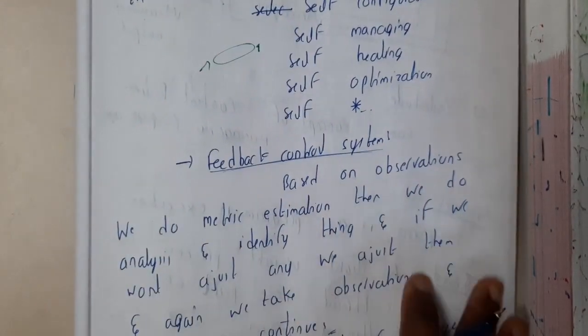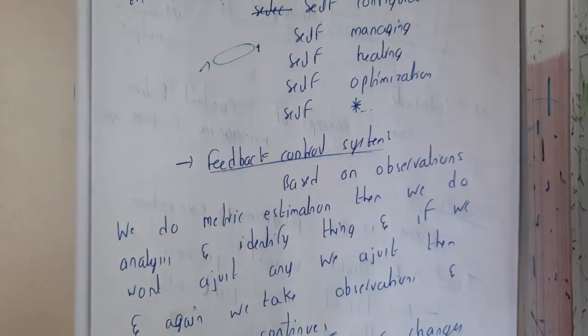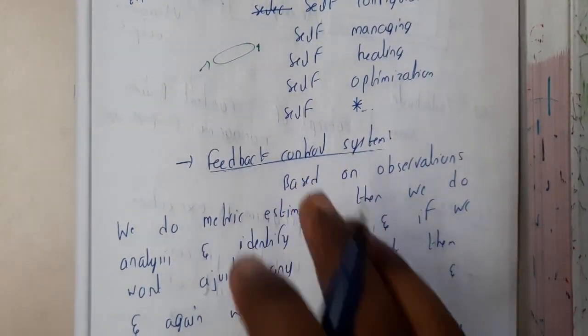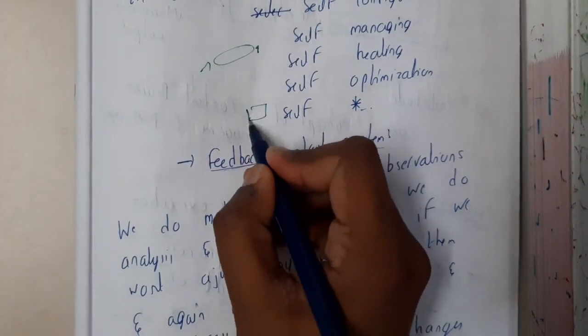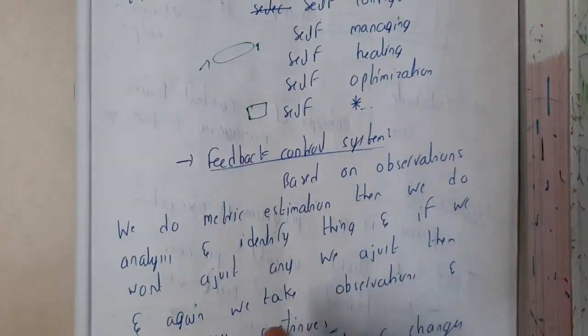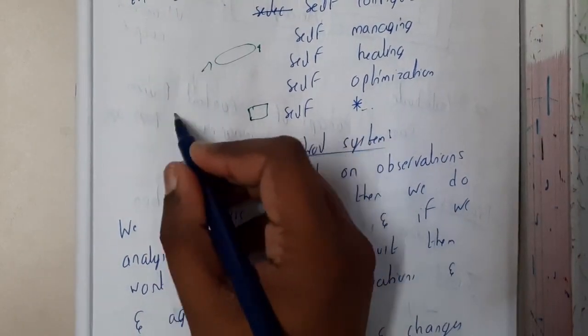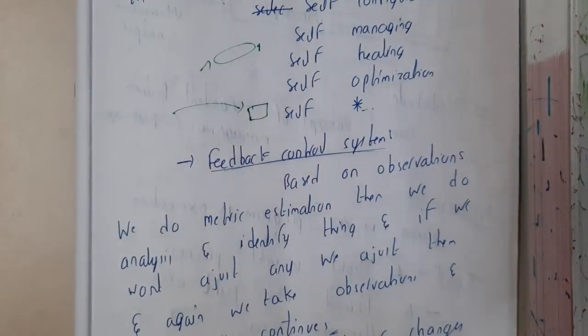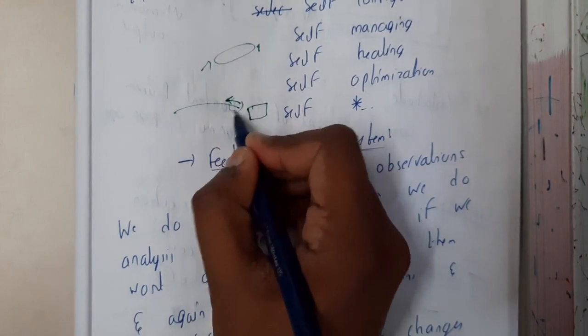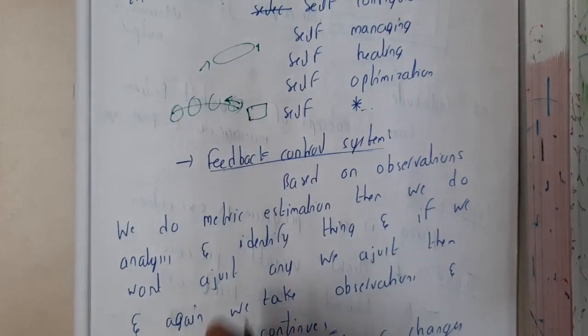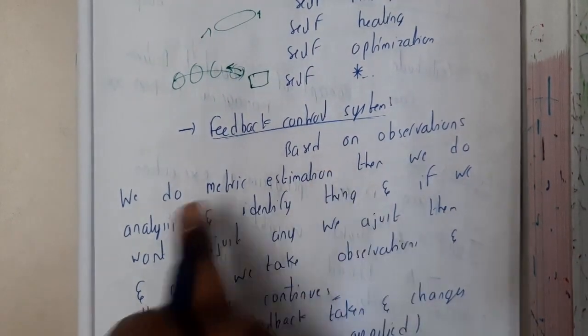One major example is a feedback control system. The best example could be machine learning. Based on the output in a reverse feedback and backtracking algorithm, if the accuracy is too low, backtracking is done by adjusting the values based on its output. That is feedback.